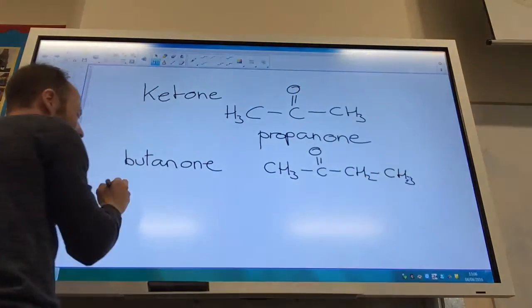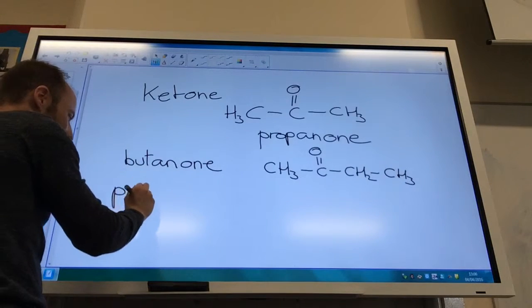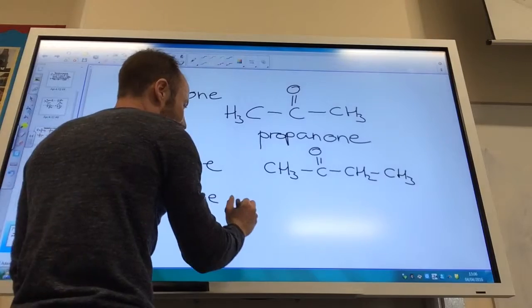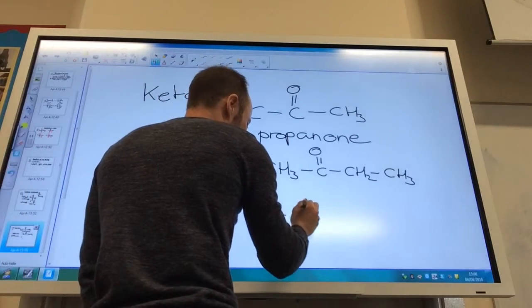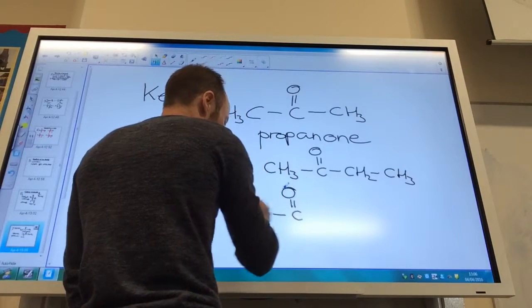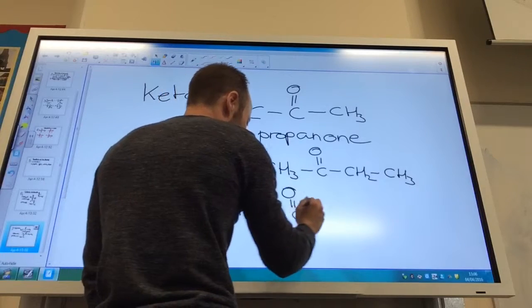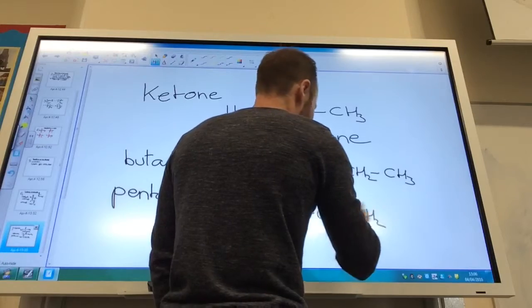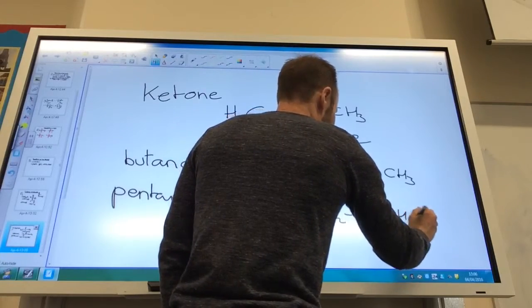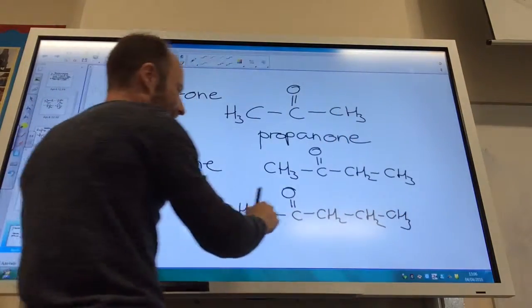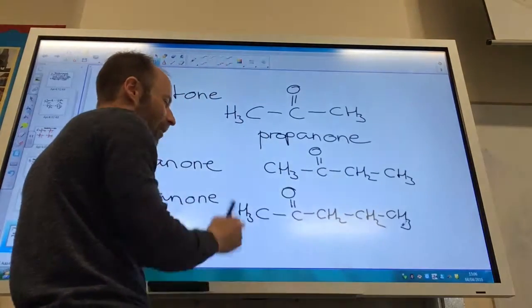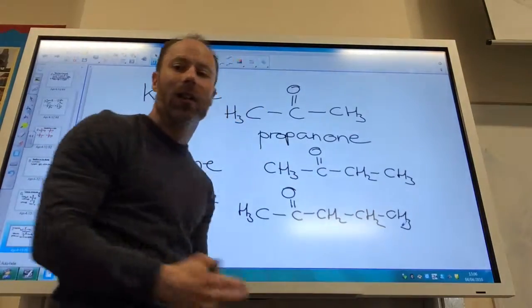It's either the second carbon from one end or the other. The first one where I need to think about numbering is pentanone. Pentanone has five carbons, so it could be like this: CH3-CO-CH2-CH2-CH3. This would be pentan-2-one. If it was on this carbon here, it would be pentan-3-one, and so on. Hopefully you can see how this works.